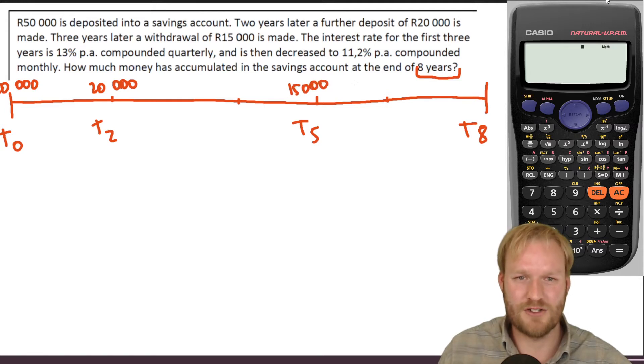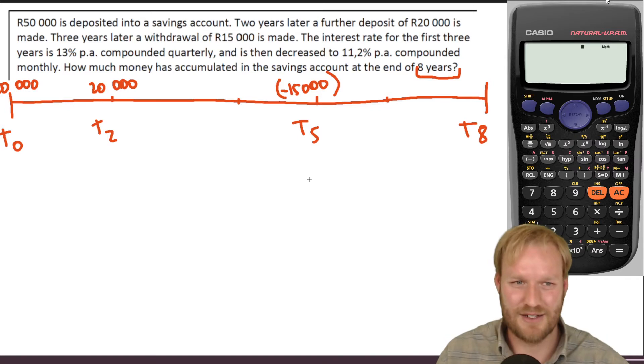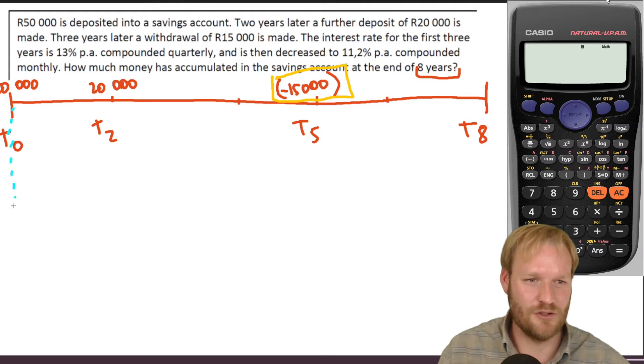Now, when we withdraw 15,000 Rand, two different conventions that I've seen people use: sometimes people put minus, and sometimes people put in brackets, or you can kind of combine the two, something that indicates that you're taking the money out. And of course, if you've got some colors with you, you could just somehow indicate that that's the story.